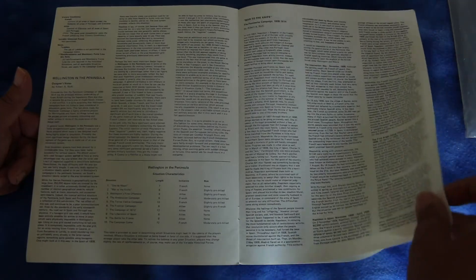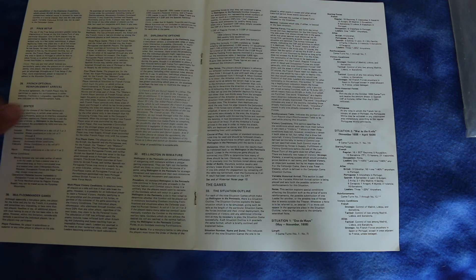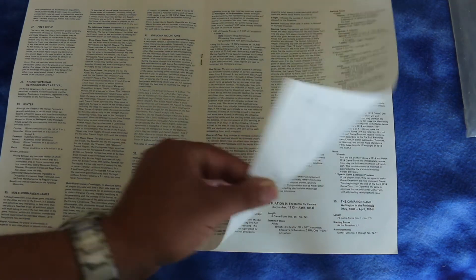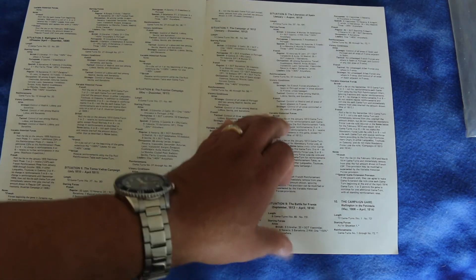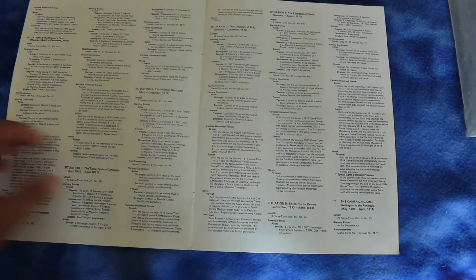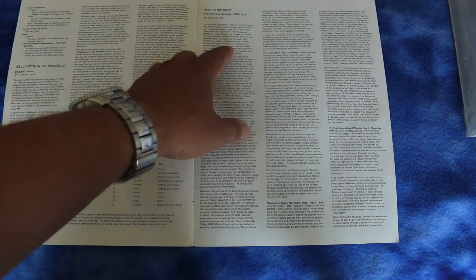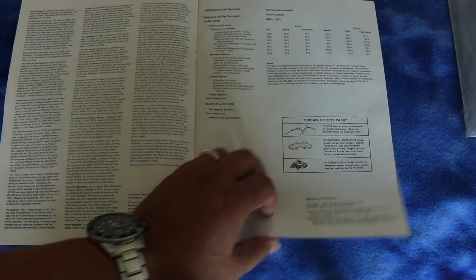Yeah, this looks like probably not a difficult game to learn. Alright, situation one, which I assume is scenario one. There's scenario one, two, eight. Looks like there's nine scenarios and then there's a campaign game. And it's got some historical background on the peninsular campaign here. Interesting. Looks like kind of a unique game.